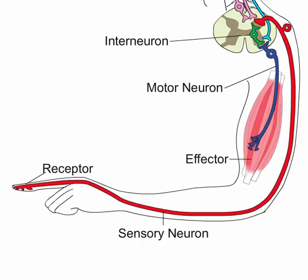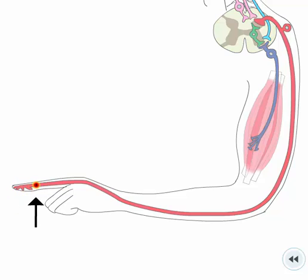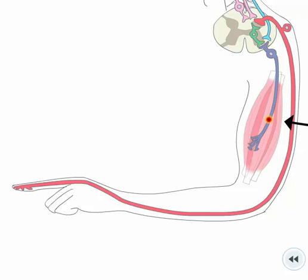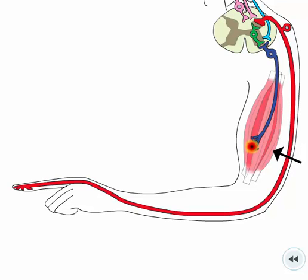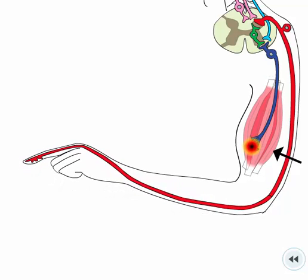We will now follow a reflex arc starting at the receptors. Receptors located in the skin or sense organs detect a stimulus and create an impulse. Sensory neurons conduct nerve impulses towards the central nervous system — the brain and spinal cord. Interneurons in the central nervous system connect sensory neurons to motor neurons. Motor neurons conduct nerve impulses from the central nervous system to an effector. Effectors respond to the impulses by contracting if the effector is a muscle fiber, or secreting an enzyme or hormone if the effector is a gland.